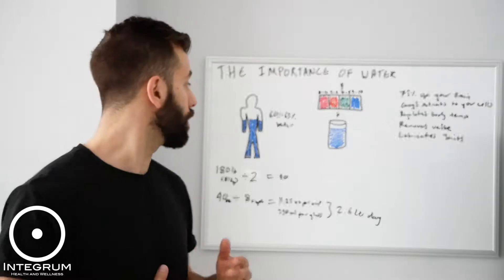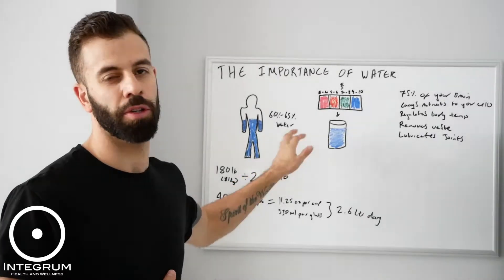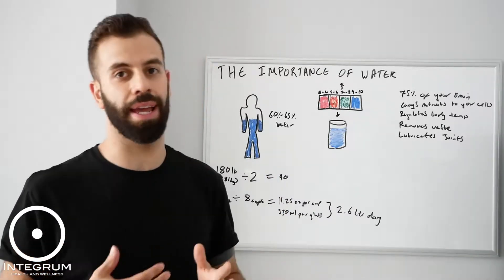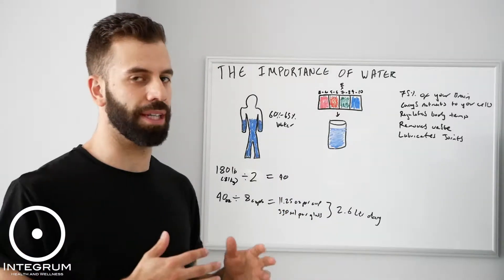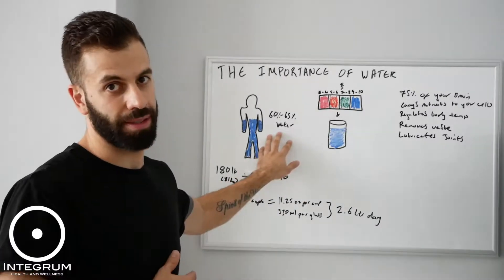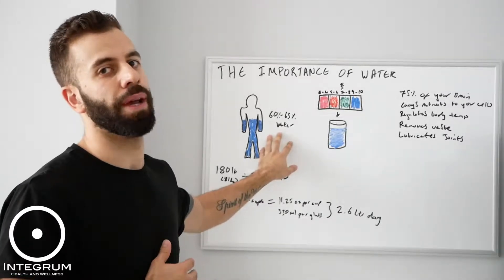Water comprises up to 65% of the human body. You might have heard this number get chucked around 70%, 90%, 80%. The common consensus is it's around 60 to 65%. What we can see from that, if nothing else, is over half your body is made up of the stuff.